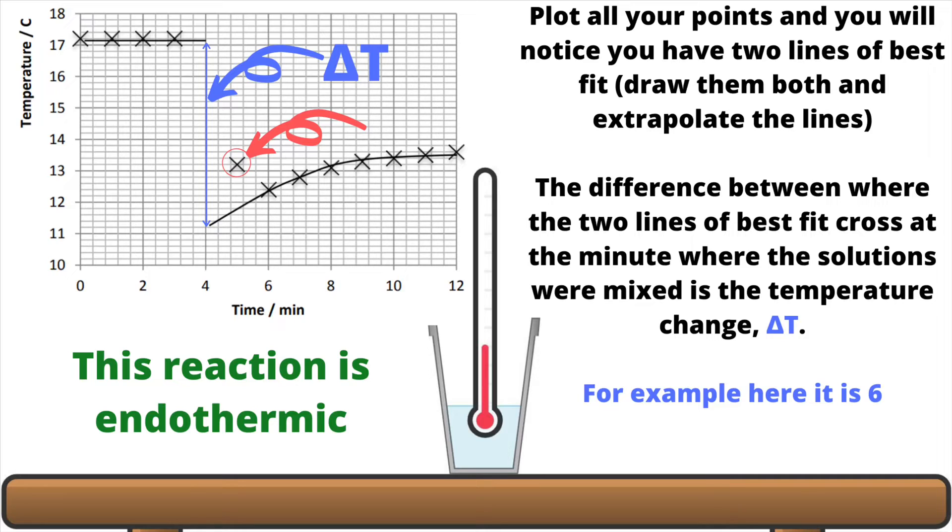Like I said my points were already plotted and after I've plotted all my points I'll notice that I've got two different areas where I can have two different lines of best fit and they've been drawn on in the black on this one. Now I've also extrapolated the lines a little bit which means I've just extended them to minute four. Now remember in the intro I said at minute four that's when my two solutions were mixed together inside the polystyrene cup and I didn't actually record the temperature at minute four because it would have been changing throughout that minute.